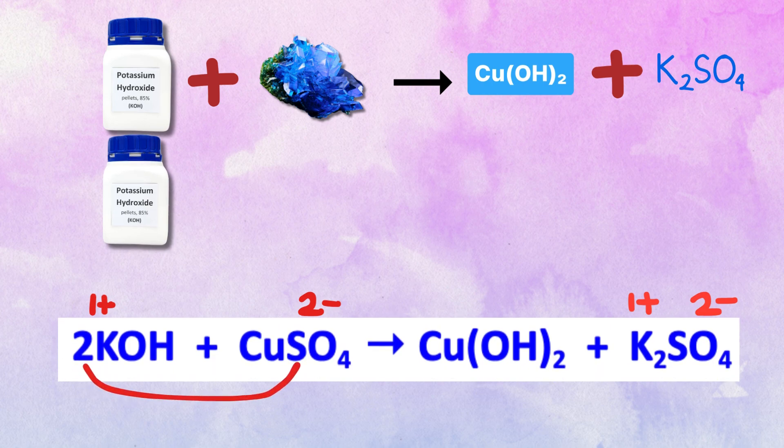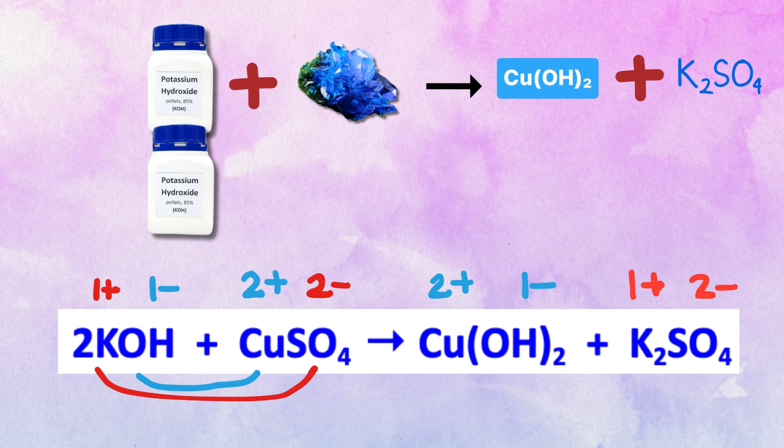So the potassium 1 plus ion from the KOH combines with the SO4 2 minus ion from CuSO4 to form K2SO4. While the copper 2 plus ion from the CuSO4 combines with the OH 1 minus ion from the KOH to form CuOH2.